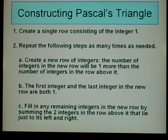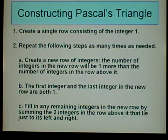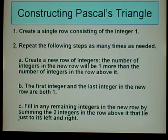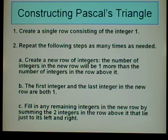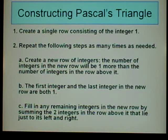There are two main steps. Step 1: Create a single row consisting of the integer 1. Step 2: Repeat the following steps as many times as needed. Step 2 is broken down into three sub-steps. A: Create a new row of integers — the number of integers in the new row will be one more than the number of integers in the row above it. B: The first integer and the last integer in the new row are both 1. C: Fill in any remaining integers in the new row by summing the two integers in the row above it that lie just to its left and right.